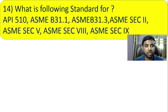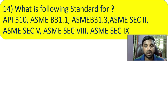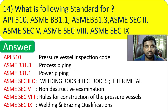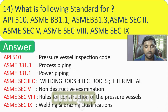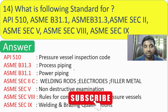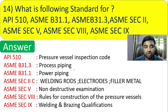Question 14: what are the following standards? API 510 — Pressure Vessel Inspection Code. ASME B31.3 — Process Piping. ASME B31.1 — Power Piping. ASME Section 2, Part C — Welding Rods, Electrodes, and Filler Metals. ASME Section 5 — Non-Destructive Examination. ASME Section 8 — Rules for Construction of Pressure Vessels. ASME Section 9 — Welding and Brazing Qualification. As a welding inspector, you must know these codes and their abbreviations.